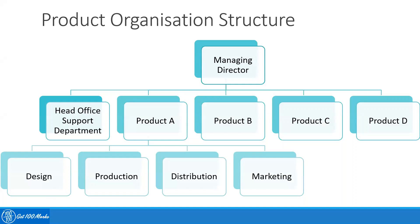Below that, everything is organized at a product level — Product A, Product B, Product C, Product D. These will typically be the chief of each product, or sometimes called CEOs of products or brand managers. They have different names, but they are product heads. They own the complete P&L of these products.